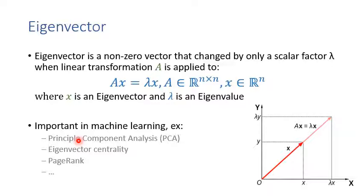Eigenvectors have a wide range of applications. In machine learning, the most important algorithm using eigenvectors is Principal Component Analysis (PCA). We can also apply them to graphs to calculate eigenvector centrality or PageRank. Eigenvectors and eigenvalues are a great example of applying linear algebra in machine learning.